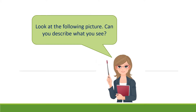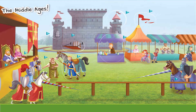Look at the following picture. Can you describe what you see? Horses. Very good. People — yes, someone is selling. Very good. What else can you see? A castle. Yes, a castle. Flags. All right. Excellent. A queen and a king. Very good.